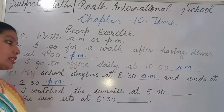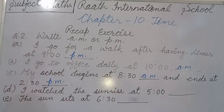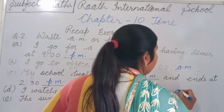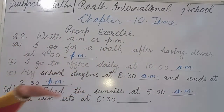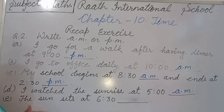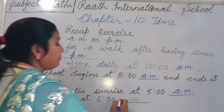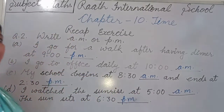Part D: I watched the sunrise at 5 — sunrise is in the morning, so that is AM. Part E: The sun sets at 6:30 — sunset is in the evening, so that is PM. With that, our recap exercise is complete.